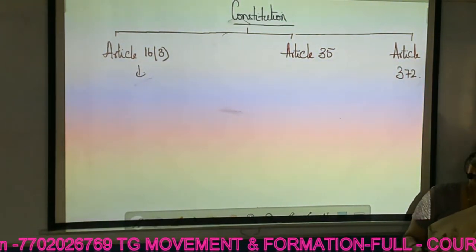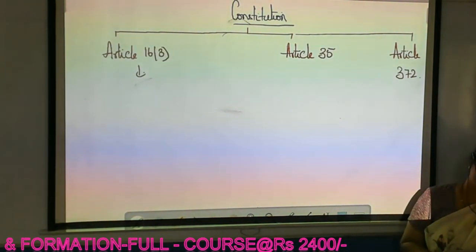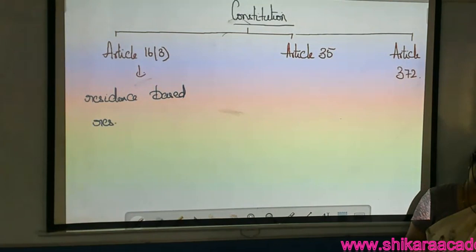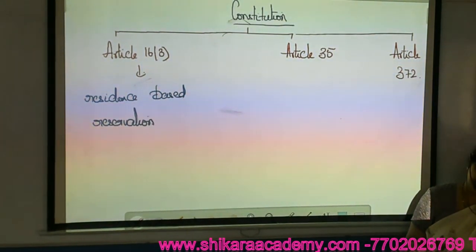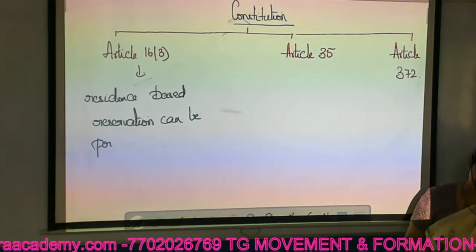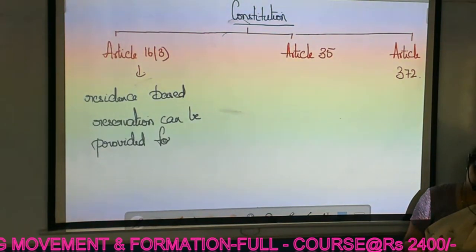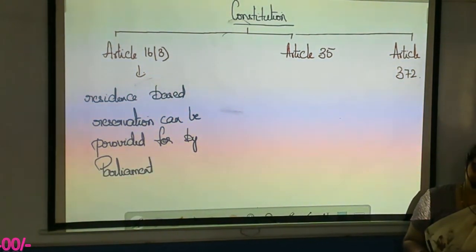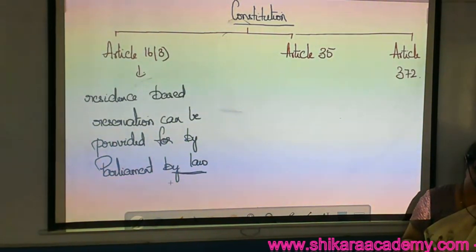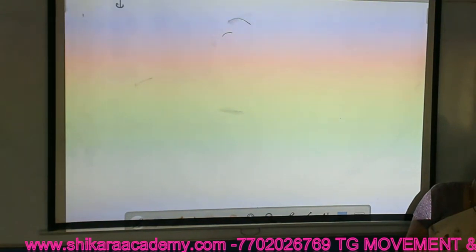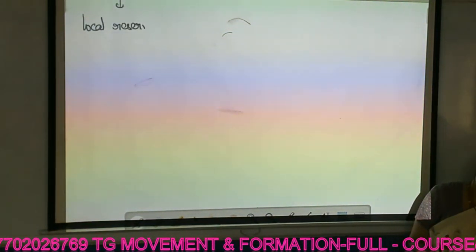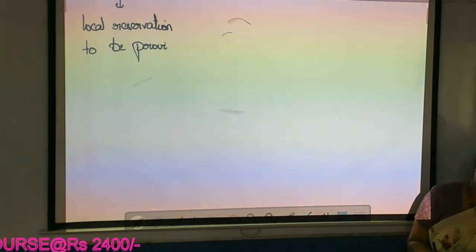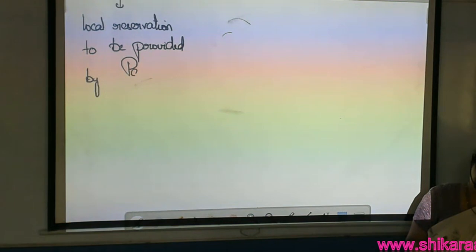Article 16 Clause 3 basically deals with residence-based reservation. It says residence-based reservation can be provided by Parliament by law — only Parliament will have the power to provide it and Parliament has to make a separate law. In simpler words, local reservation is to be provided by Parliament, and states do not have the power to provide it.